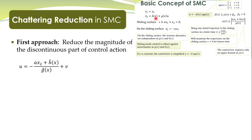H-hat is the nominal model, or the known part of this nonlinear function. So we have split the control action into two parts: one continuous part and one discontinuous part. While selecting this control law we have ensured that it brings any initial condition to the sliding surface and maintains the trajectories on the sliding surface.